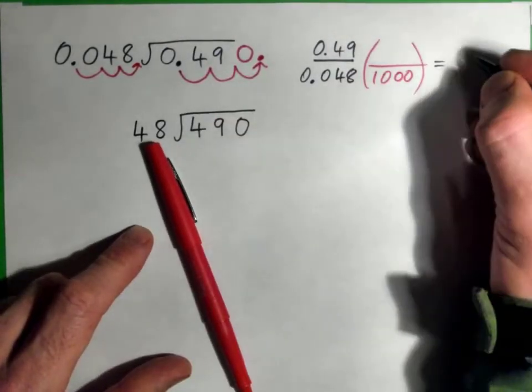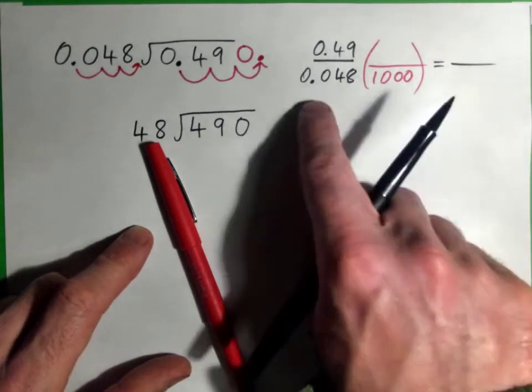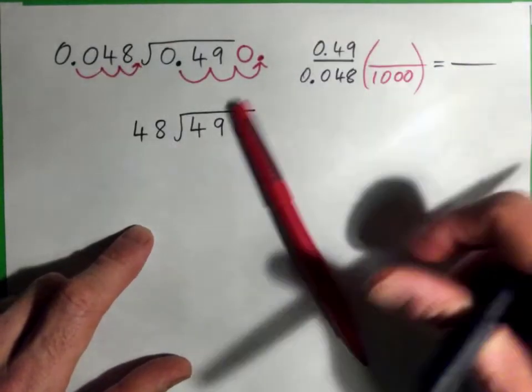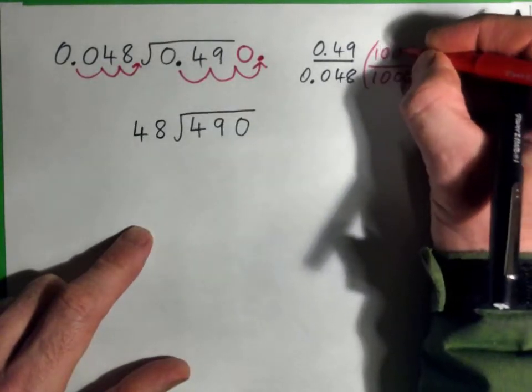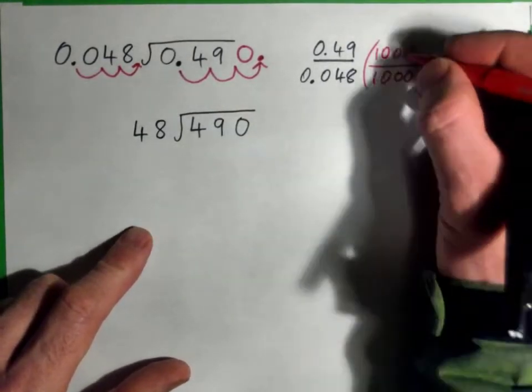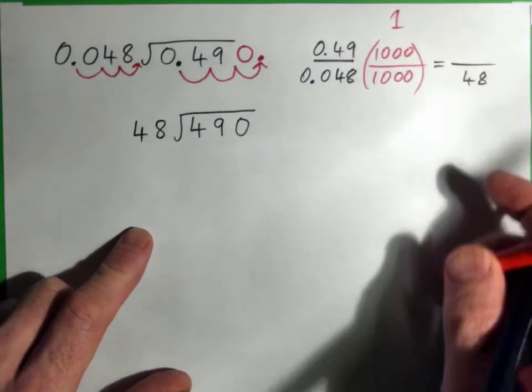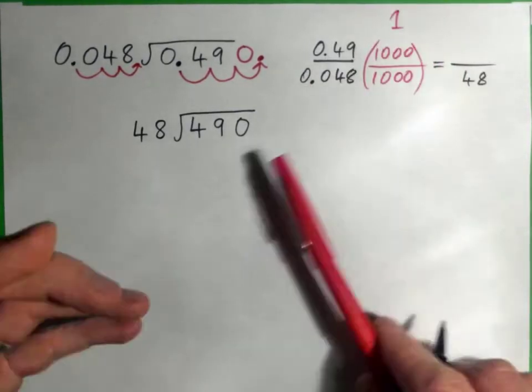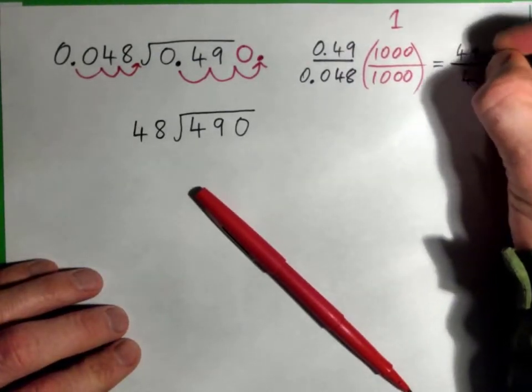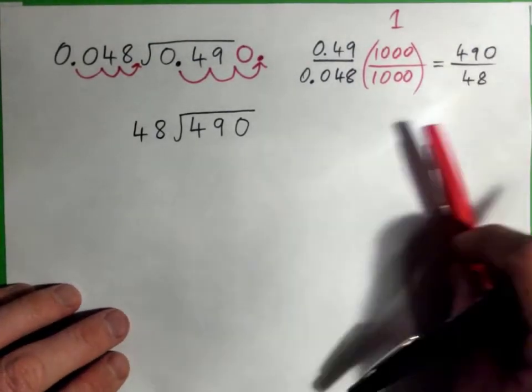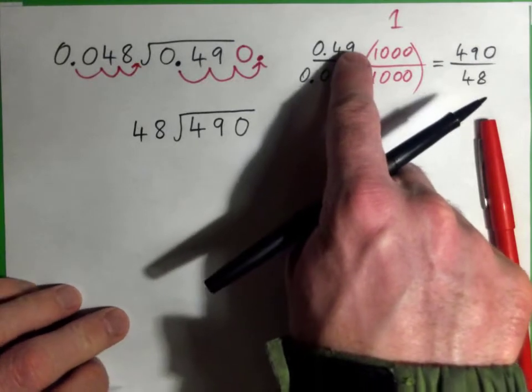And when we do that, multiply it by 1,000, it will move one, two, three spots to the right to give 48. But we must also multiply the top by 1,000 if we multiply the bottom by 1,000 because 1,000 over 1,000 is 1. We've multiplied this fraction by 1 so we haven't changed the value. We just changed what it looks like.